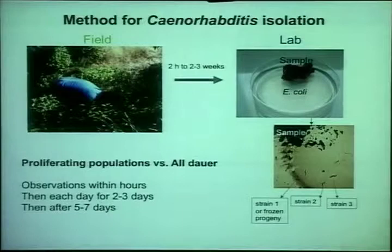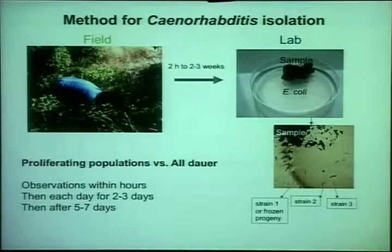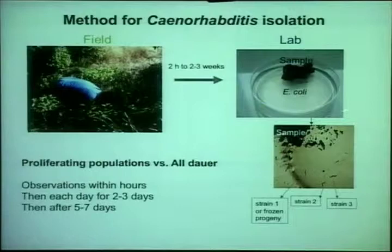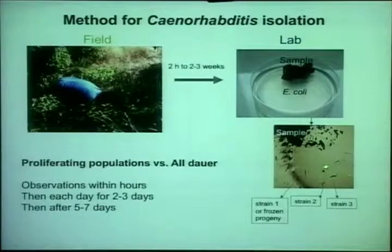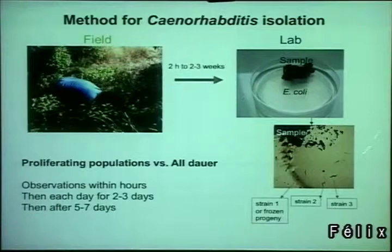I've been trying to isolate Caenorhabditis for many years — it seems a job for undergrads and PIs. The way we do it in the lab, when Antoine Barrière was in the lab quite a few years ago, we put samples on Petri dishes with E. coli, the worms come out, and we can within hours of sampling determine their stage, pick them, and establish strains. The advantage is that we get the stage of the worms in the populations right away.